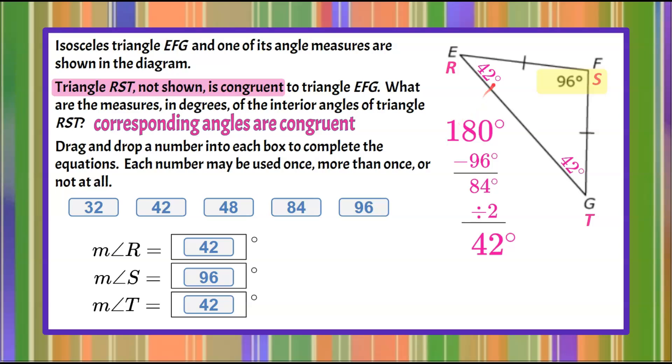So there you have it. 42 degrees for measures angles R and T, and angle S was given as 96 degrees. Corresponding angles of congruent triangles are congruent.